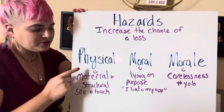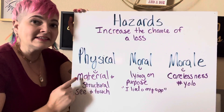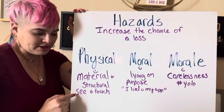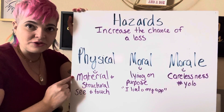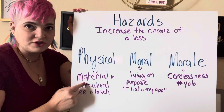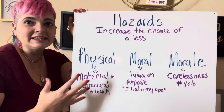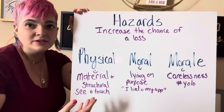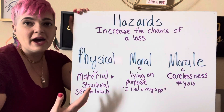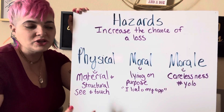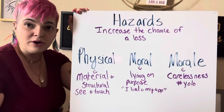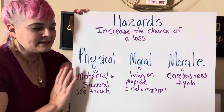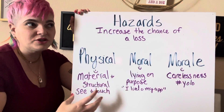A physical hazard is something that is material and structural — the easy way to say it is something that you can see and touch. You can see materials and touch structure. Examples of a physical hazard could be gas cans next to rags in the garage, a pothole in the road, or a tree branch that fell into the road. It's anything that you can interact with, see, and touch — material and structural.